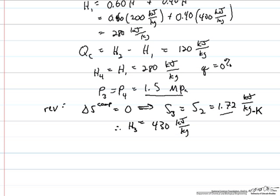Thus we can determine through an energy balance the work for the reversible compressor, which is just equal to the enthalpy change in going from stream 2 to stream 3, and that's equal to 30 kilojoules per kilogram of reversible work required for the compression.